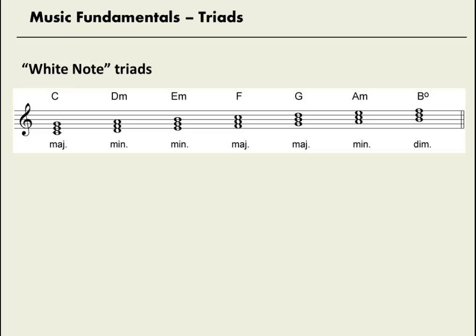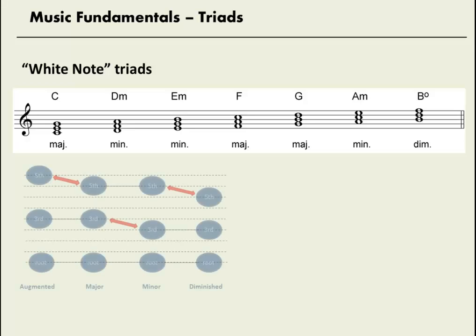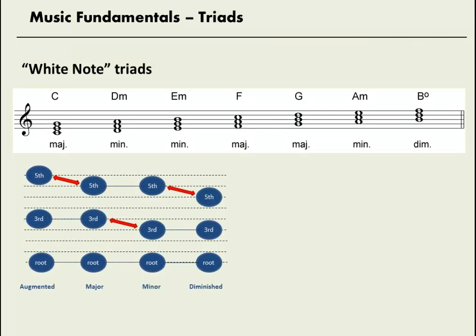Any triad will begin with one of these seven spellings. Any F chord — F major, F minor, F diminished, whatever — will all have the letter names F, A, C. Any D chord — D major, D minor, D flat major, D sharp minor — any D chord will have the letter names D, F, A. If we know the quality of the white note spellings and we know the relationship between the four triad qualities, we can spell any triad.